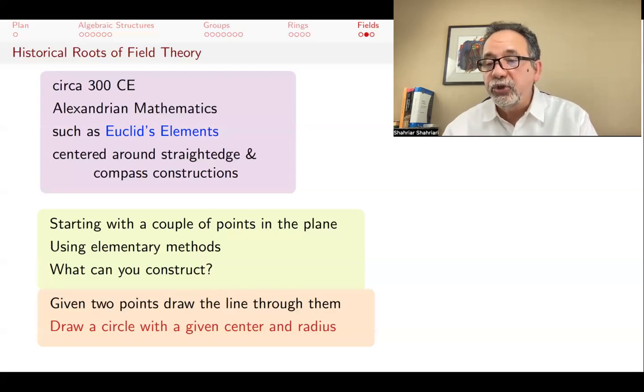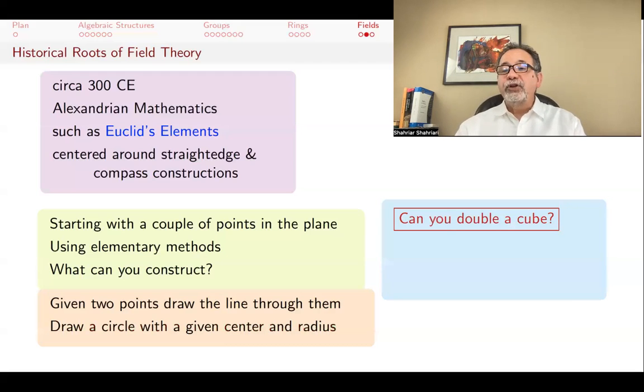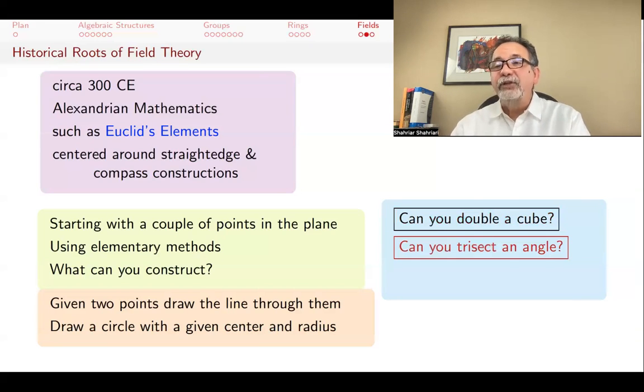The main geometry question from this perspective is, what are all the things that you can do using these elementary methods? Some classical questions that went unanswered for a very long time were, can you double a cube? If you're given one edge of a cube, then can you, using straight edge and compass, construct the edge of another cube that has twice the volume? That's what doubling a cube means.